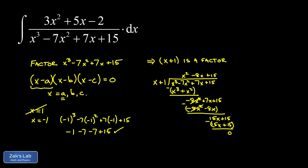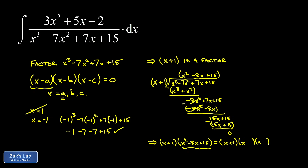So our original cubic polynomial can be expressed as x plus one times x squared minus 8x plus 15. Factoring that quadratic is a guess-and-check process. I need two numbers that multiply to 15 and add to negative eight — that's negative three and negative five. So the full factorization of the denominator is x plus one times x minus 3 times x minus 5.